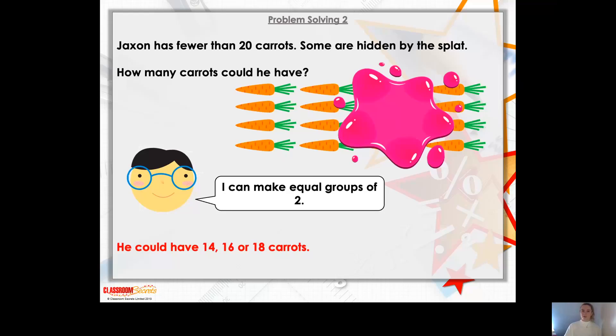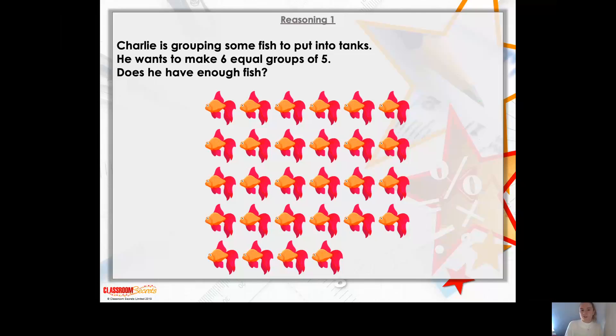OK, let's try another question. So Charlie is grouping some fish to put into tanks. He wants to make six equal groups of five. Does he have enough fish? Well, how many columns have we got? Let's count.